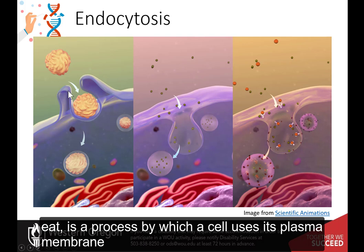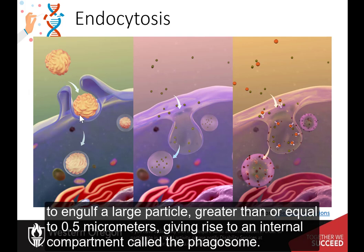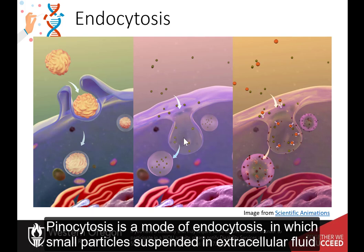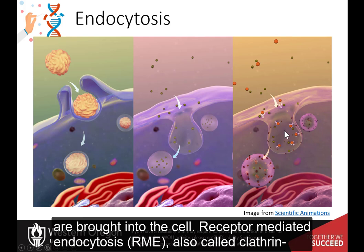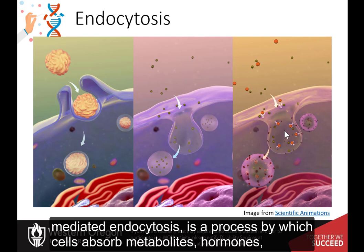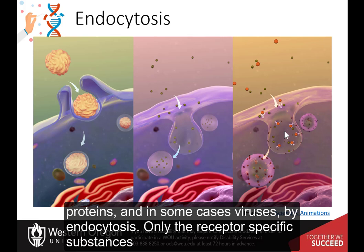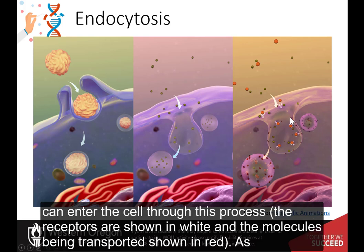Phagocytosis, meaning to eat, is the process by which a cell uses its plasma membrane to engulf a large particle greater than or equal to 0.5 micrometers, giving rise to an internal compartment called the phagosome. Pinocytosis is a mode of endocytosis in which small particles suspended in extracellular fluid are brought into the cell. Receptor-mediated endocytosis, or RME, also called clathrin-mediated endocytosis, is a process by which cells absorb metabolites, hormones, proteins, and in some cases viruses, by endocytosis. Only the receptor-specific substances can enter the cell through this process. The receptors are shown in white and the molecules being transported are shown in red.